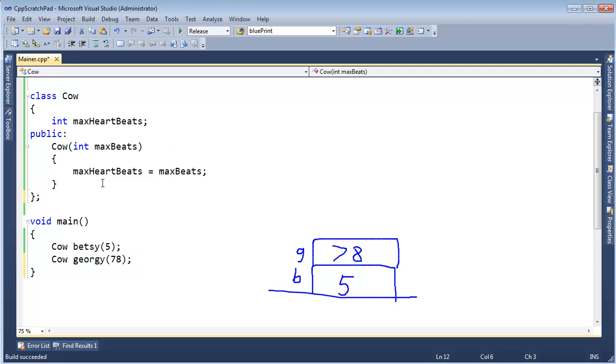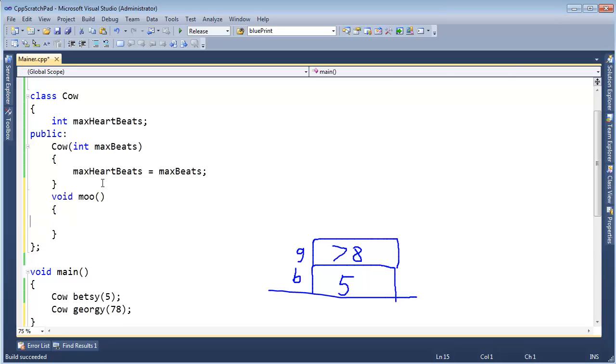My stack, I'm just growing it upward. It just doesn't really matter, and each cow is made up of a four-byte int, so nothing real special here when I say cow. I'm basically saying int, because that's all that's in a cow right now. Betsy, max heartbeats is five, and Georgie, max heartbeats is 78. All right, now let's go down here, and I'm going to make a moo function.